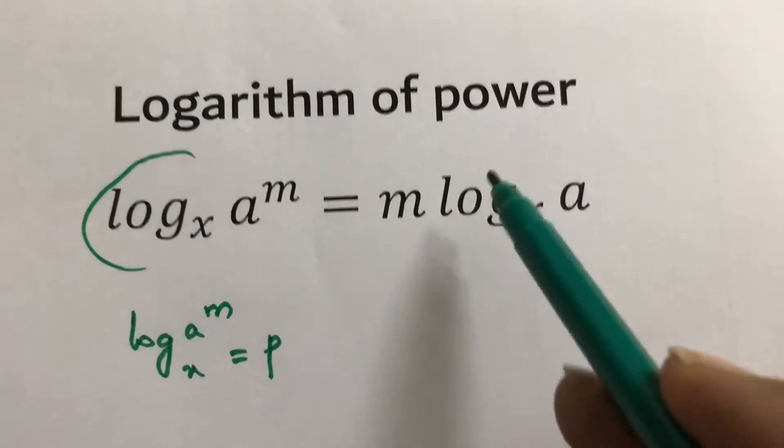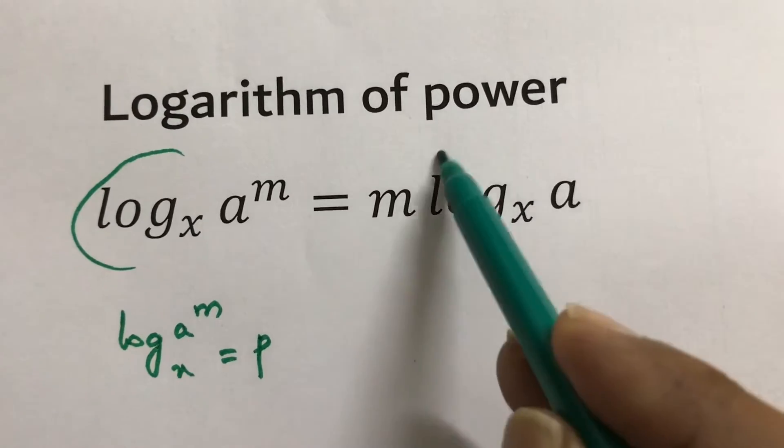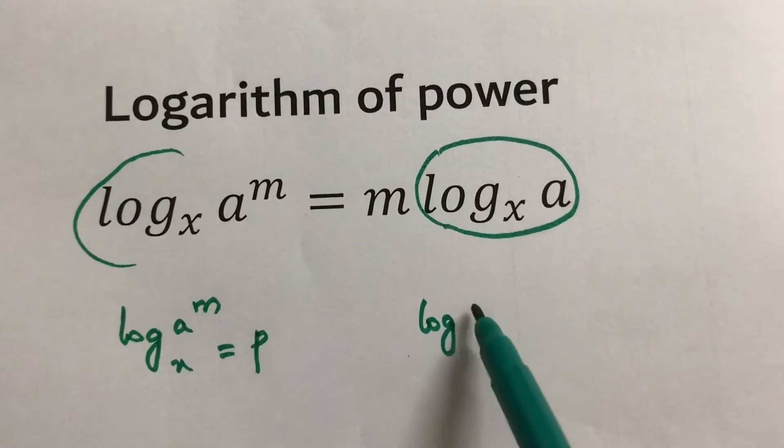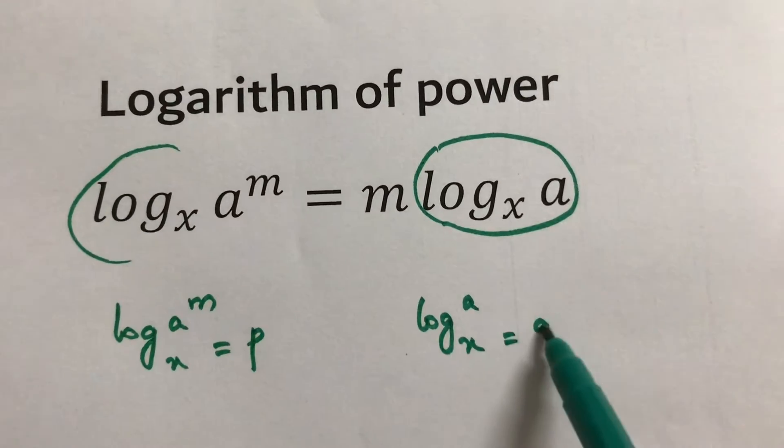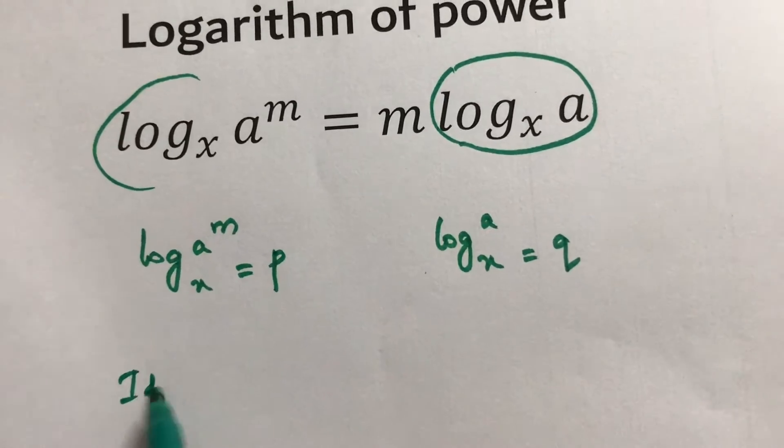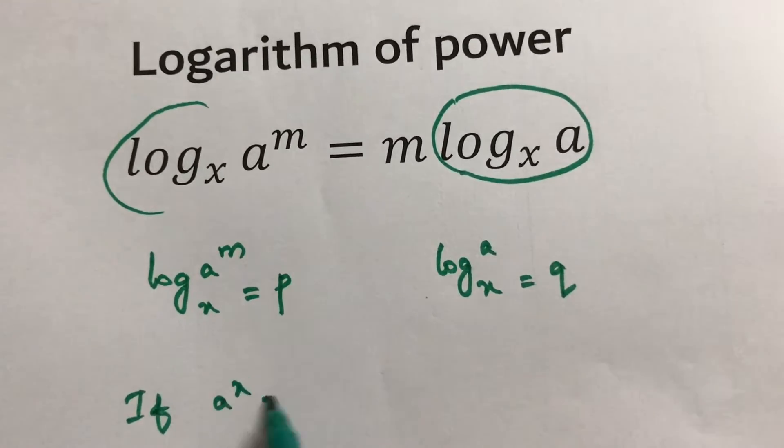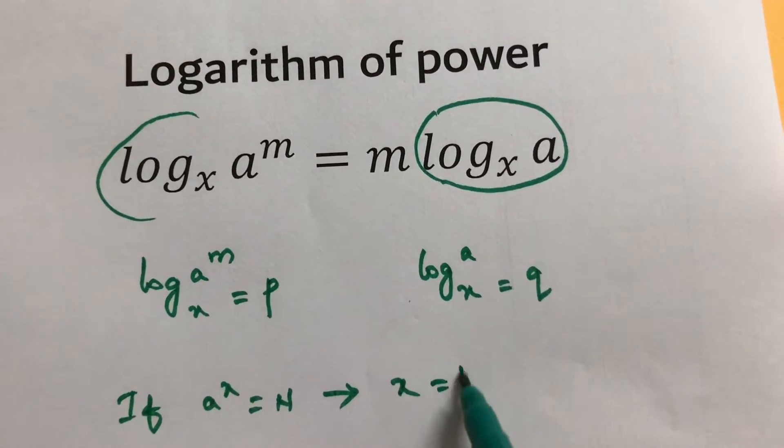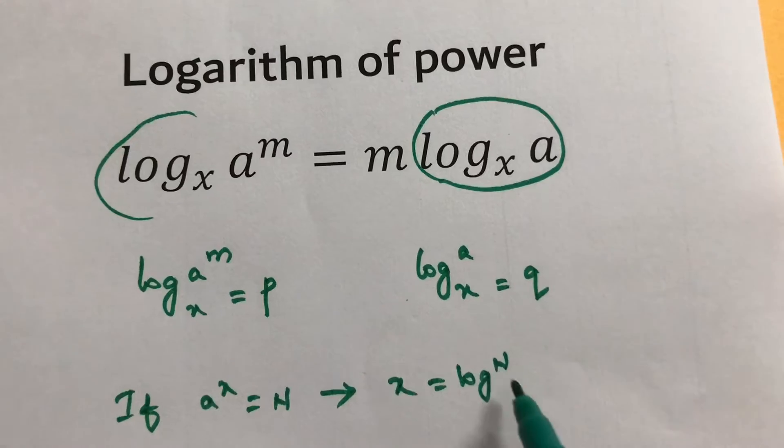And consider this second term as q, so log base x of a equals q. According to the definition of logarithm, if a to the power x equals n, then x is said to be the logarithm of n to the base a.